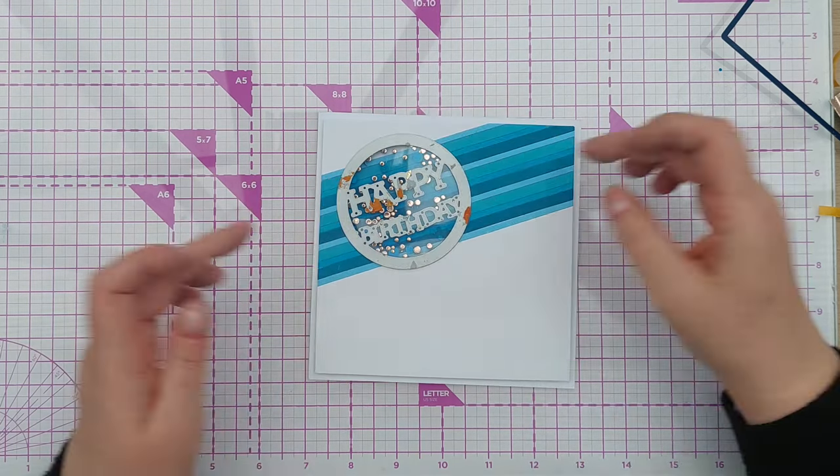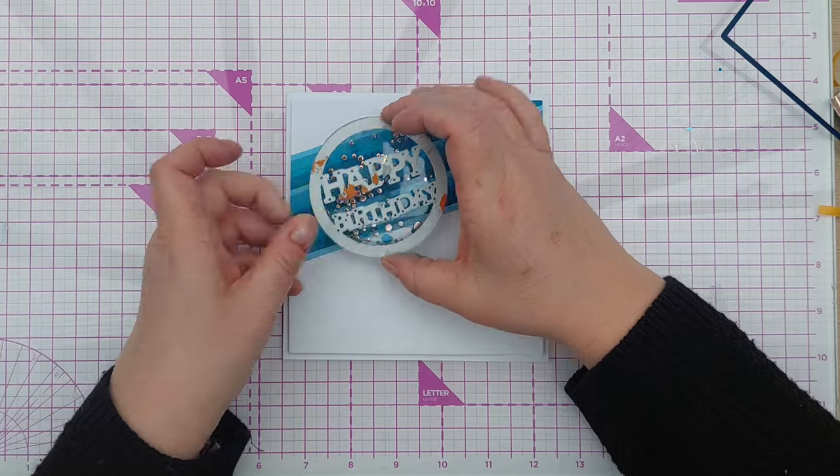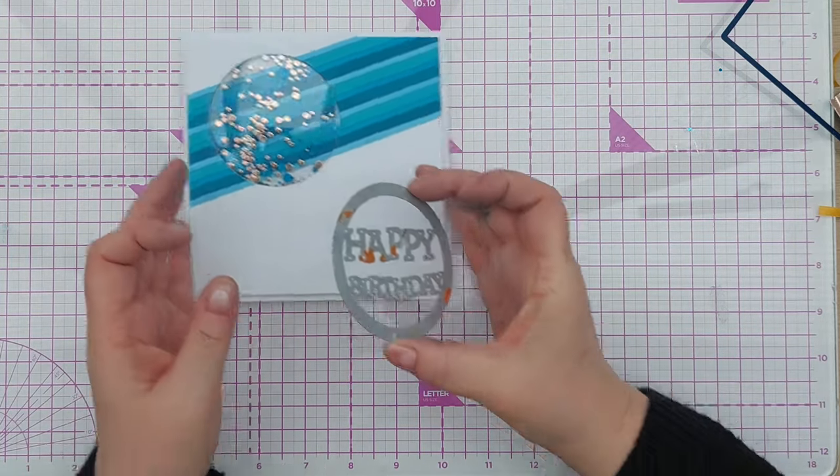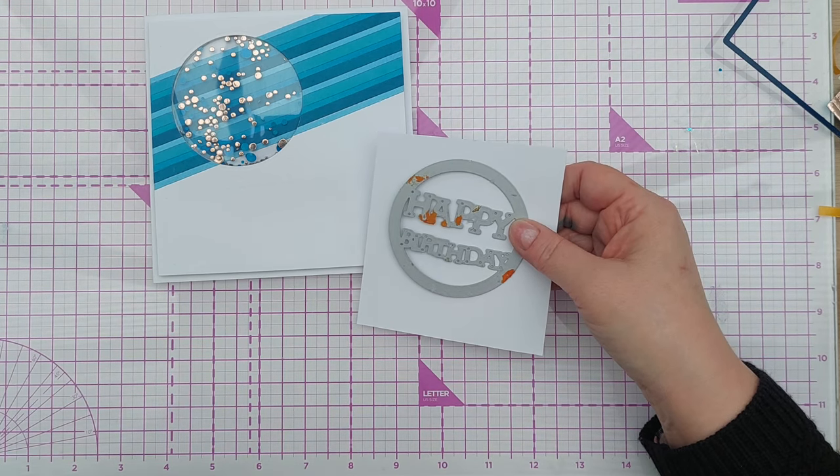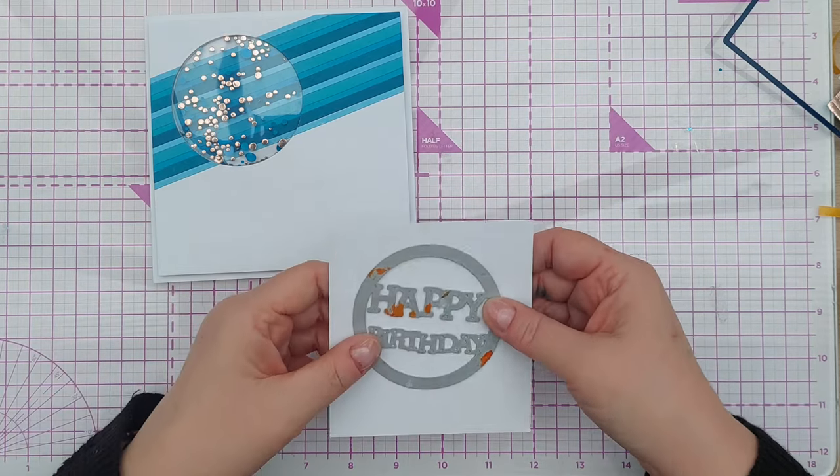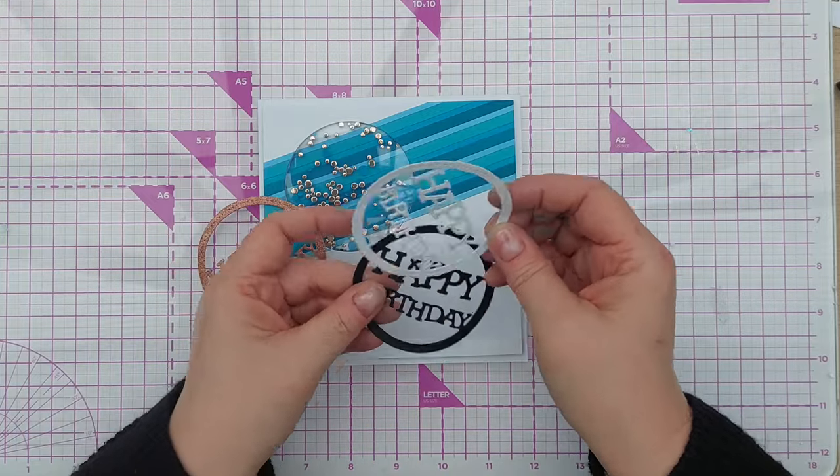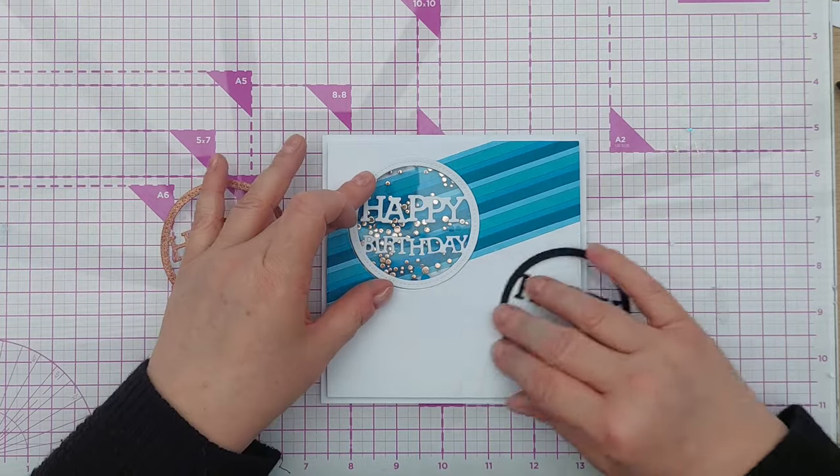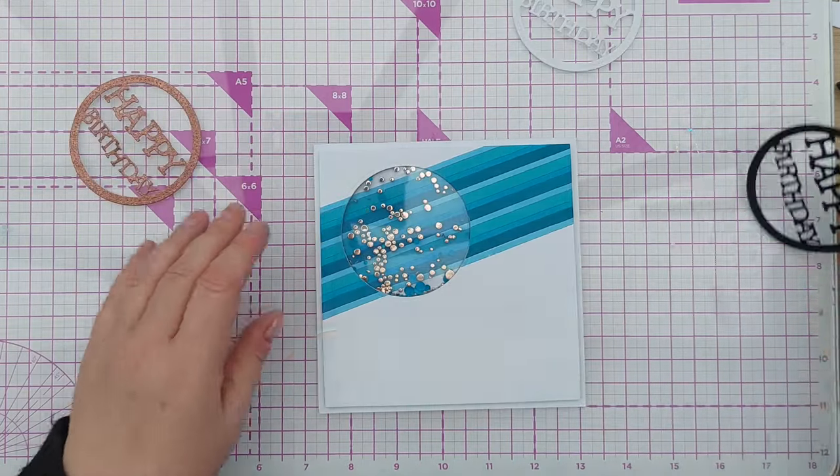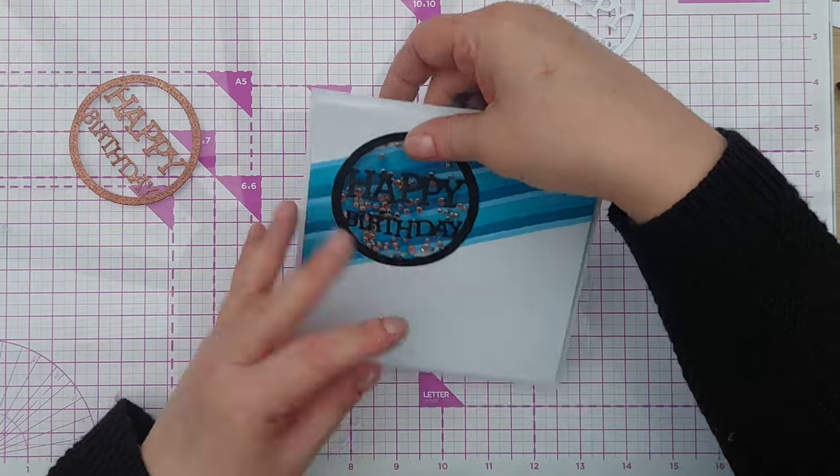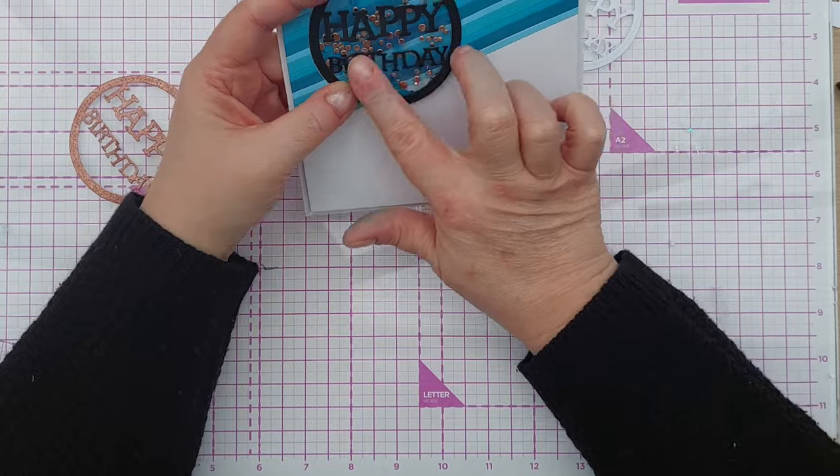Now I need my birthday circle. I'm trying to decide whether I want it to go across like that or diagonal in line with the stripes, but I'm thinking like that. Let me know what you think. I'm going to cut this out of smooth white cardstock first to see if it stands out enough. I've actually cut this out of three different cardstocks: white, black, and copper glitter cardstock.